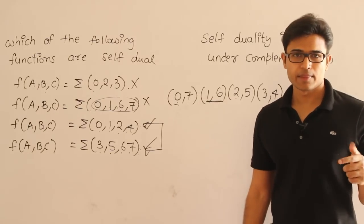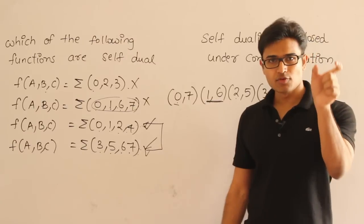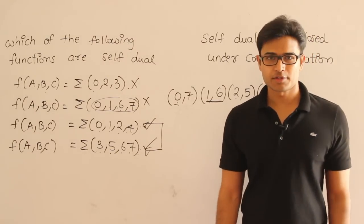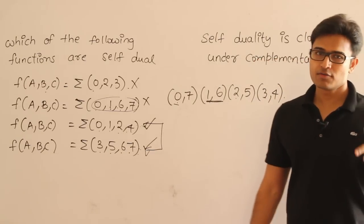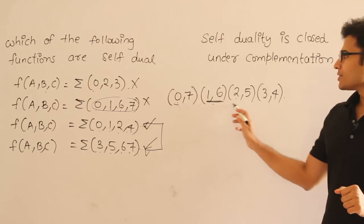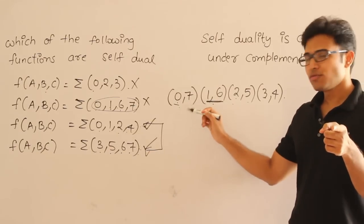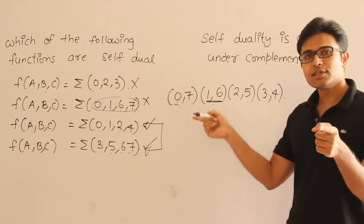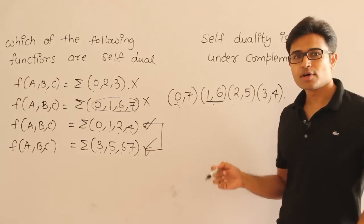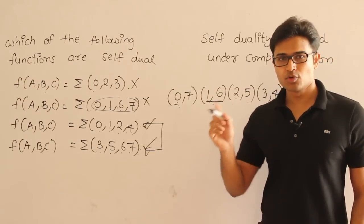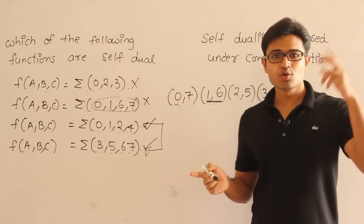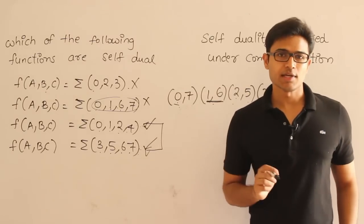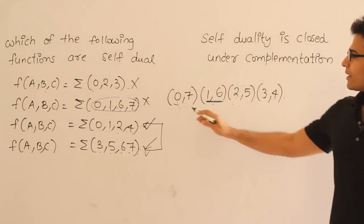Self-duality is closed under complementation — if you take a self-dual function and complement it, the result is also a self-dual function. This is possible because if a function is self-dual, among all mutually exclusive pairs you would have picked only one from each pair. When you complement it, you pick the other one. So the complement will still be neutral and will still have no two mutually exclusive terms both selected.